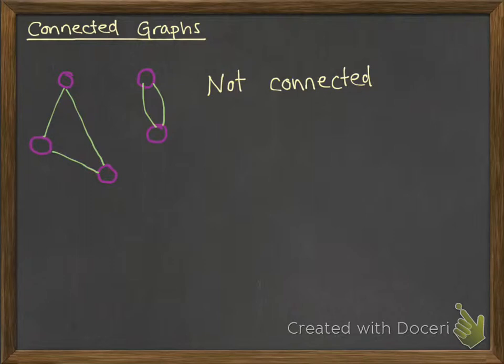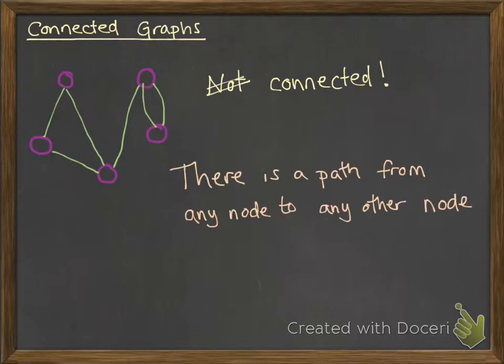For our graph to be connected, all of the nodes have to be linked into all other nodes — maybe not directly. They don't have to link to every single other node with an edge directly, but you have to be able to get from one node to any other node. So if we add in an edge, now this one is connected. We call it connected if there is a path from any node in the network to any other node in the network.